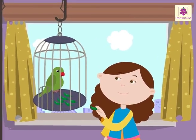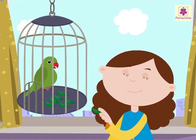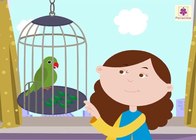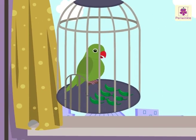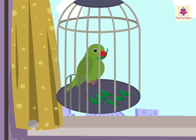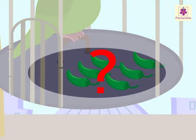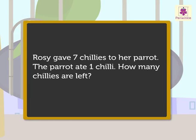Let us begin with one such story. Rosie gave seven chilies to her parrot. The parrot ate one chili. How many chilies are left? First, we read the story. What information does it give? Rosie gave seven chilies to her parrot. The parrot ate one chili.